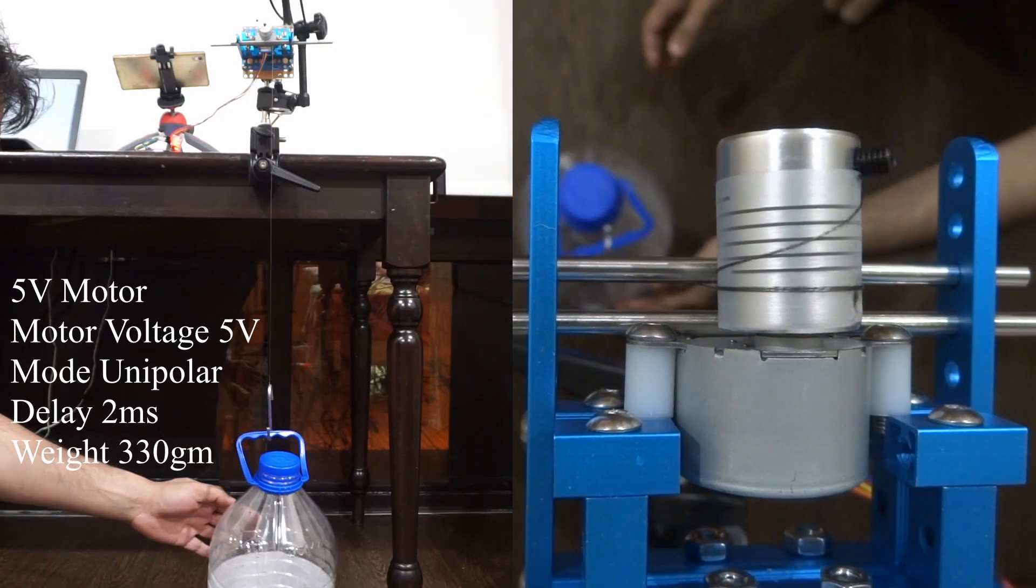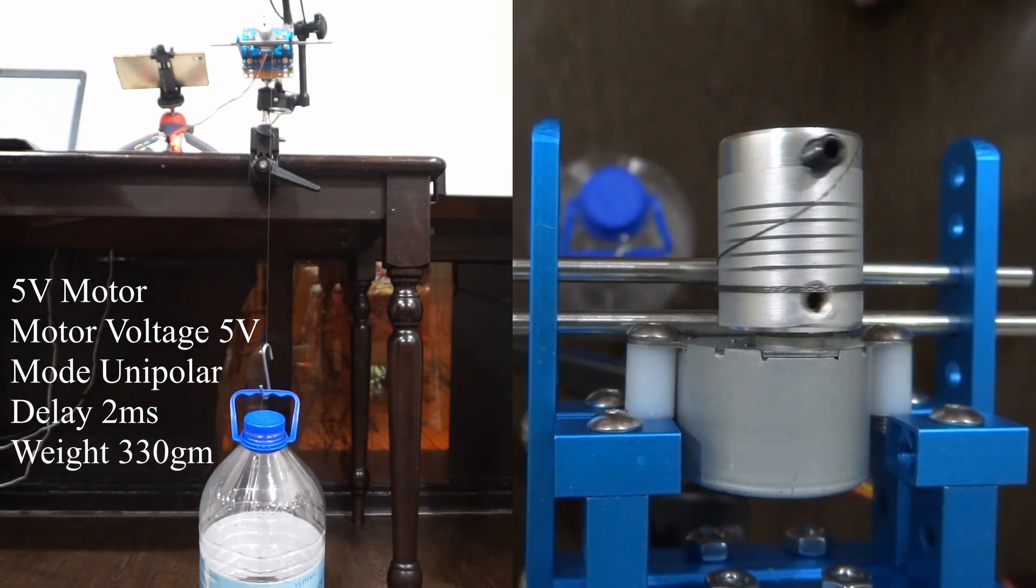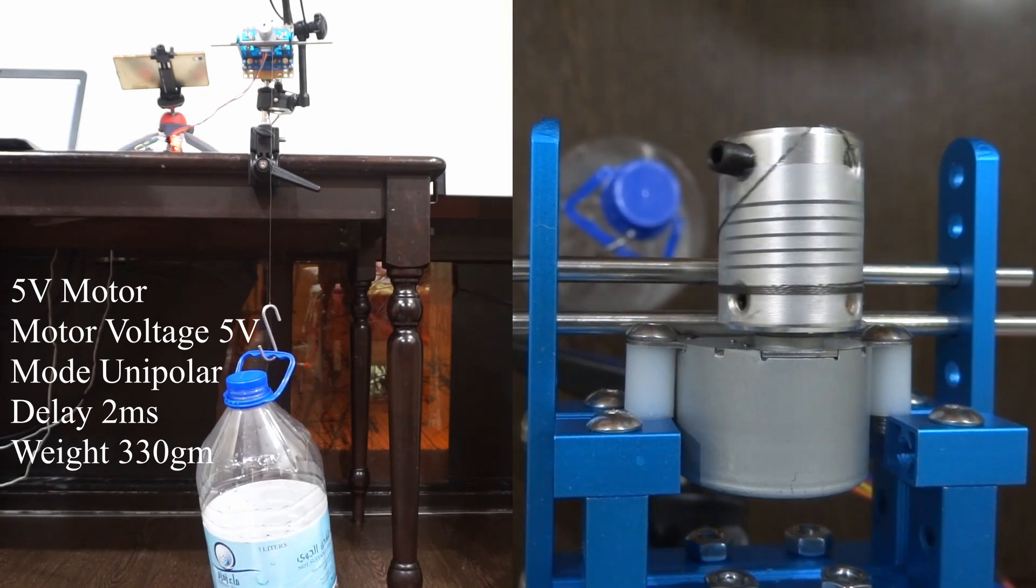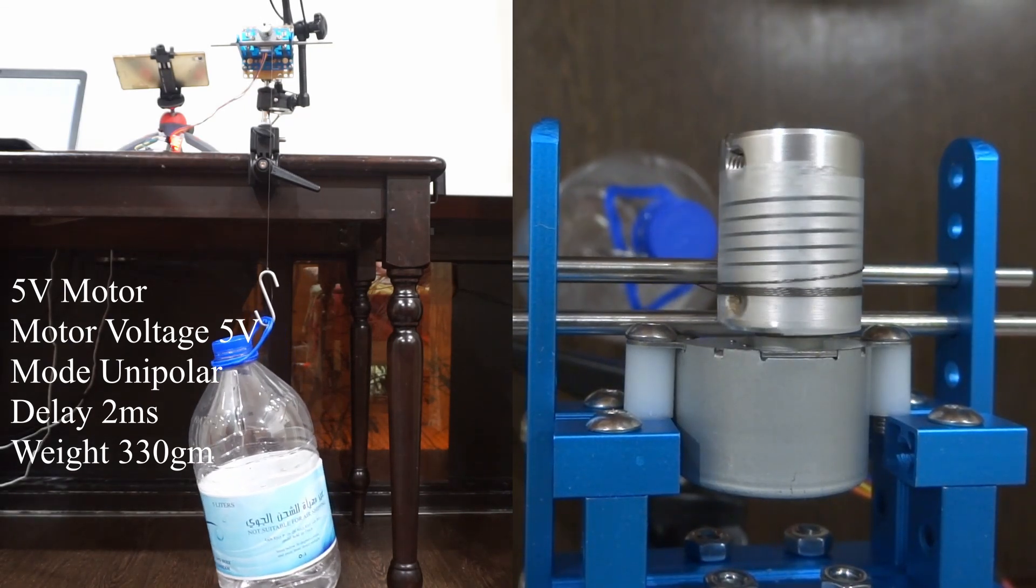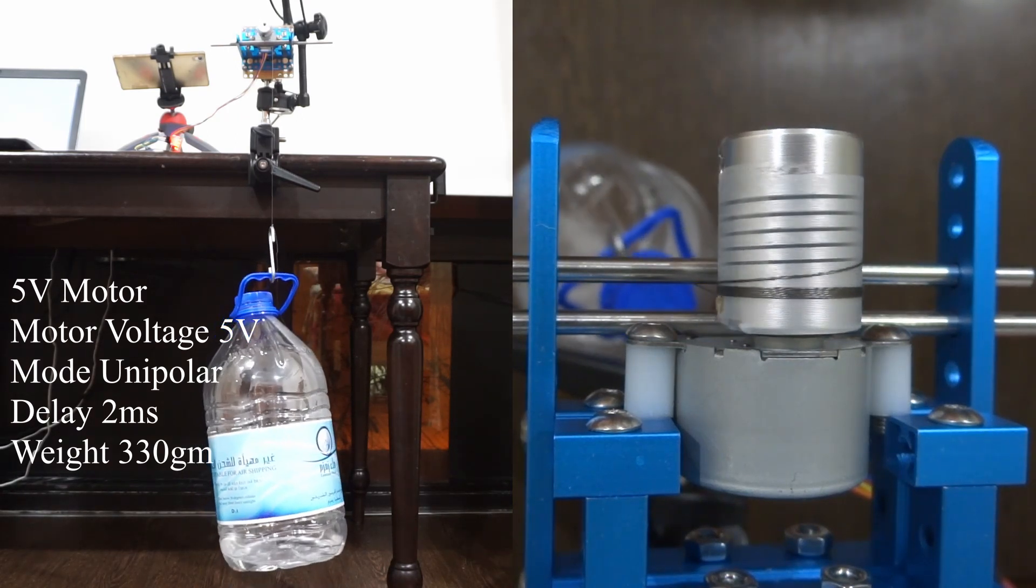This setup is using a unipolar stepper motor driver ULN 2003 with a 5V motor. The weight of the bottle is 330 grams. The motor is having a bit of a hiccup as the bottle is swinging but normally it is well capable of lifting weights till 370 grams during my test. So the motor torque now is 330 grams force centimeter.